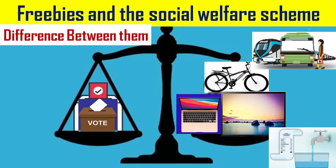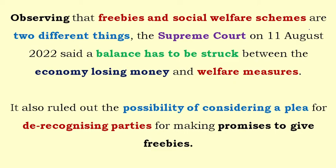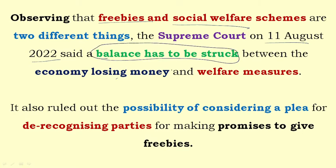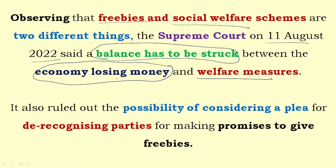Hello, namaskar, jai hind to all of you. Today we are going to discuss a very debatable topic which is right now frequently in the news. What is called a freebie — 'upahar' — and a social welfare scheme — 'samajik kalyan yojna'. The Supreme Court observed on 11 August 2022 that freebies and social welfare schemes are two different things, and that a balance needs to be struck between the two.